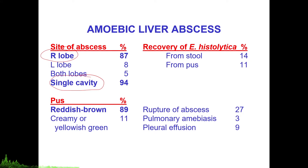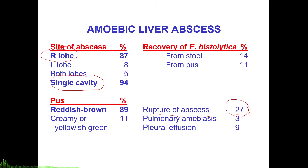Rupture of abscesses is a very important and potentially life-threatening complication that we should always remember when dealing with amoebic liver abscess. If you are highly suspecting amoebic liver abscess, try to do your imaging first before doing deep abdominal palpation, as it may rupture the large abscess if present.